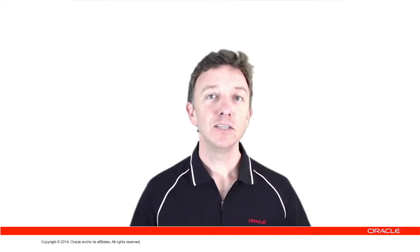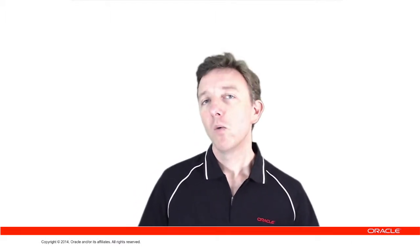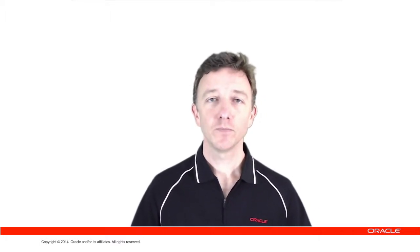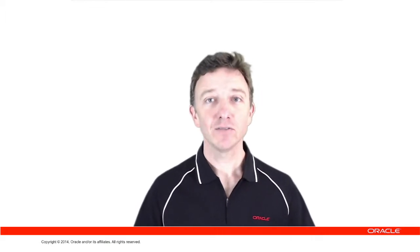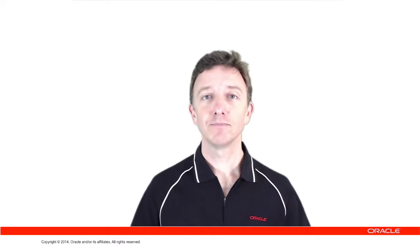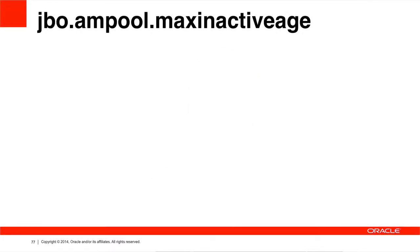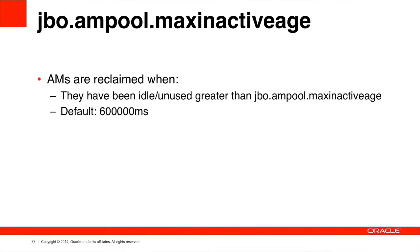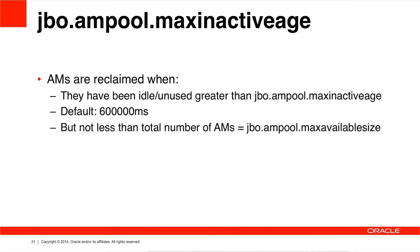The first parameter, MaxInactiveAge, is used for the more normal operation of the pool, while TimeToLive is for when something has gone seriously wrong. Upon a pool sweep, the pool monitor looks at each application module and determines when it was last used. If the application module has been idle for longer than JBO AM Pool MaxInactiveAge — which is 600,000 milliseconds or 600 seconds by default — the application module is a candidate to be cleaned up. This is regardless of the application module status. The pool will also pay attention to the MinAvailableSize and MaxAvailableSize parameters when deciding whether to actually clean it up.